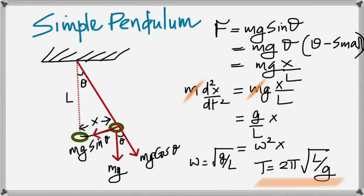What's surprising in the pendulum equation T = 2π√(L/g) is that the time period does not depend on the mass attached — 10 grams or 1 kilogram makes no difference. Also, it does not depend on the amplitude, provided the angle is small (about 10 degrees or less), since that was the condition we used for the small-angle approximation sin θ ≈ θ.